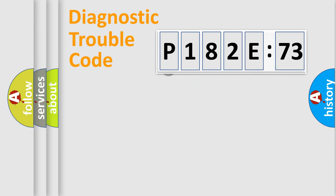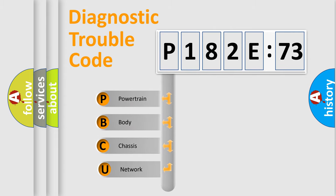Powertrain, Body, Chassis, Network. This distribution is defined in the first character code.